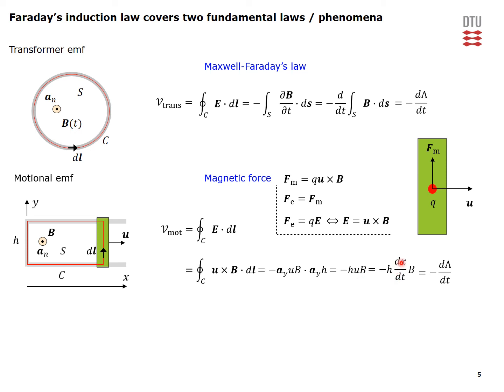The result is minus H times U times B. Since velocity U is the time derivative of coordinate X, we replace U with dX/dt and move the time derivative outside, leaving H times X inside — which is the surface area changing with time as the bar moves. Multiplying this by the magnitude of the flux density gives the magnetic flux linkage. So the induced electromotive force is again given by Faraday's induction law, but here explained by the fundamental magnetic force law.